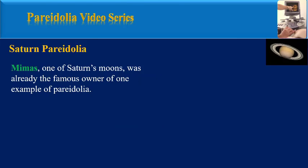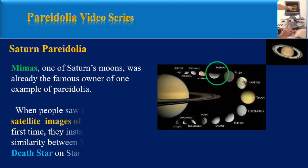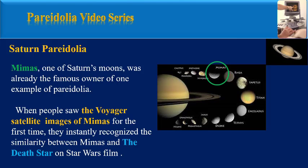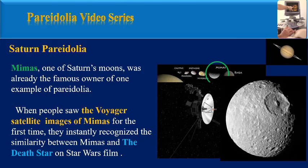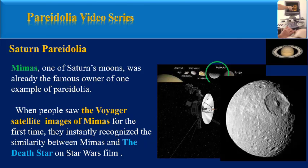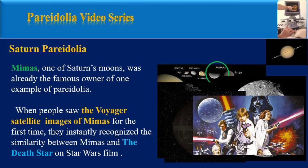Mimas is the name of one of Saturn's moons, and it was already a famous example of Pareidolia. When people saw the Voyager satellite images of Mimas for the first time, they instantly recognized the similarity between Mimas and the Death Star from the Star Wars film.